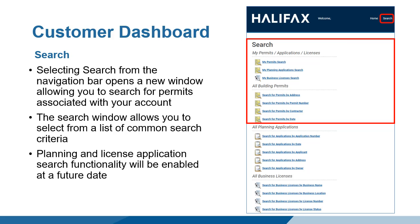The Search button in the navigation bar opens a window listing common search types. The top half of the page is related to permitting. It also lists searches for planning applications, which will not be enabled until Release 3, and Business Licenses, which will be enabled in Release 2.